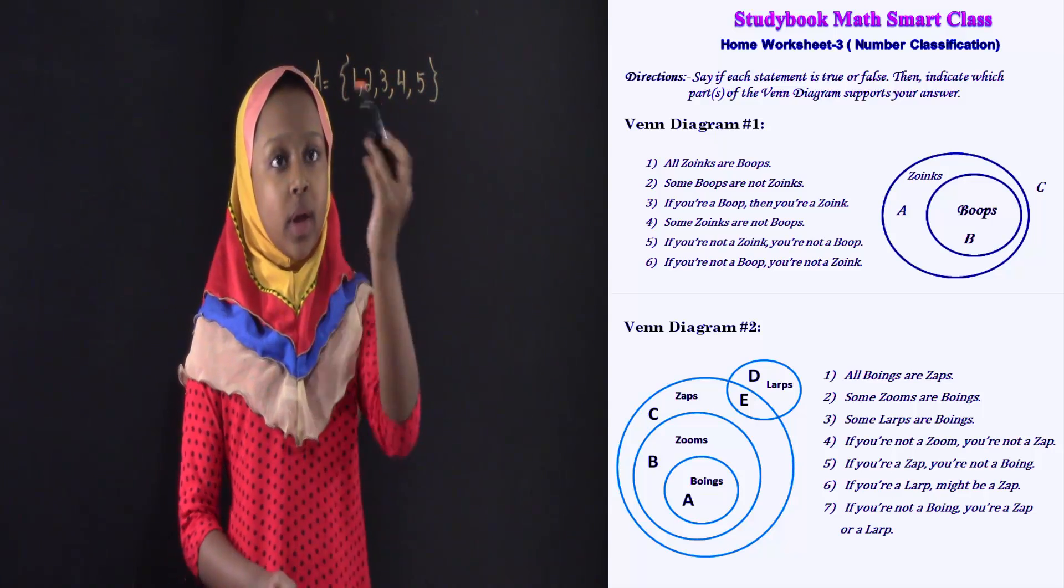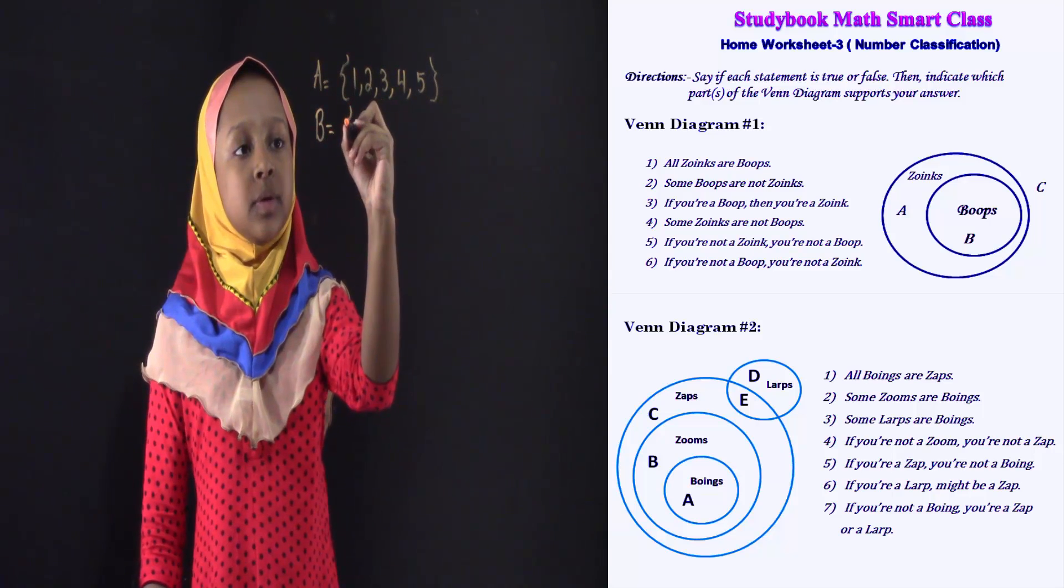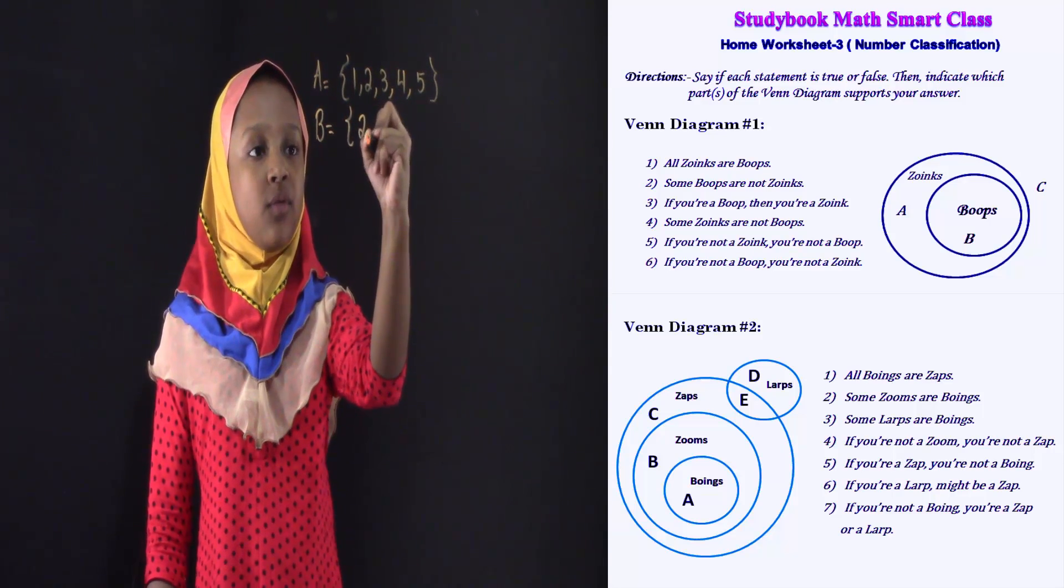So, over here we have a couple of numbers. Now I'm going to draw another set, set B. And in set B, I'm going to write two and four.